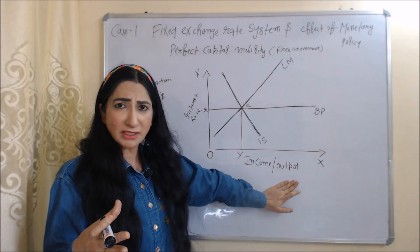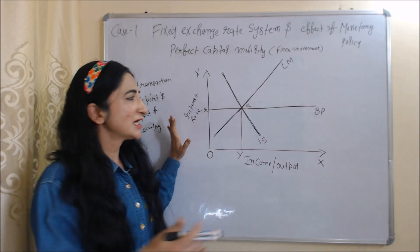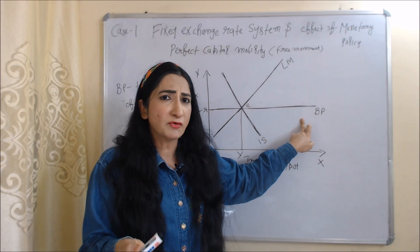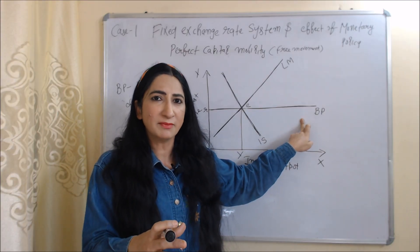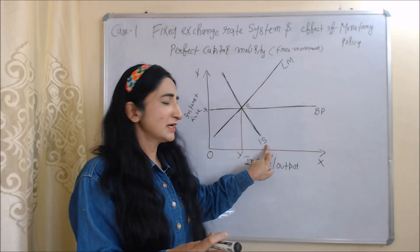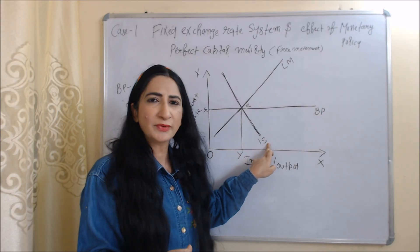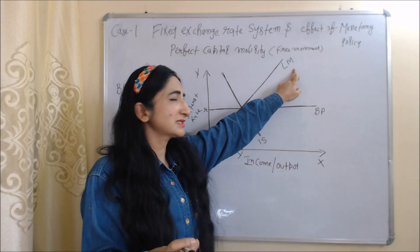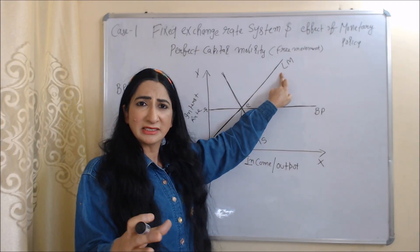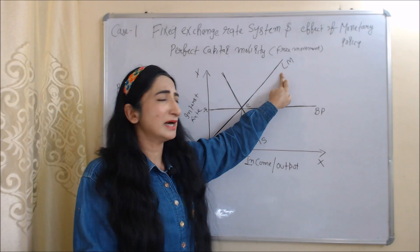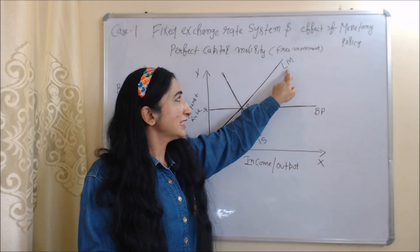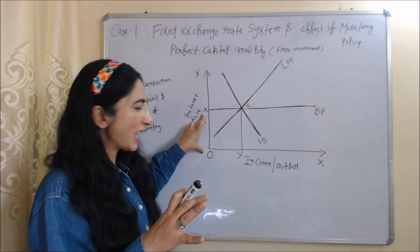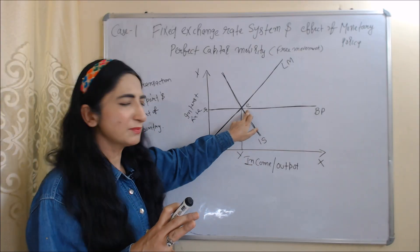In this diagram, on the X-axis we have income or output, and on the Y-axis we have interest rate. This horizontal BP line represents our balance of payment, which shows the transactions of our exports and imports. The IS curve — where I represents investment and S represents saving — shows equilibrium in the goods market. The LM curve — where L represents liquidity or money demand and M represents money supply — shows equilibrium in the money market. Initially, our interest rate is OR and income is OY, and our equilibrium point is E.